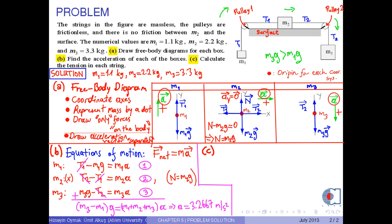Finally, C, calculate the tension in each string. From equation 1 in part B, we have T1 equals M1 times G plus A. If we put the corresponding numerical values into this equation, we obtain approximately 14.4 Newtons. This is the tension on the string connecting M1 and M2.